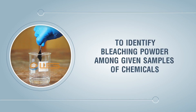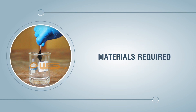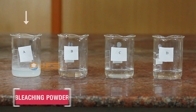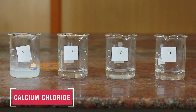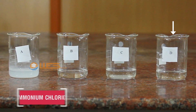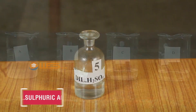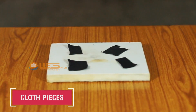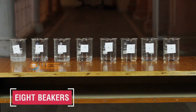Identify bleaching powder among given samples of chemicals. Materials required: given four solutions of bleaching powder, sodium chloride, calcium chloride, and ammonium chloride or alternate salt, dilute sulfuric acid, small pieces of colored cotton cloth, black, eight beakers 100 ml.